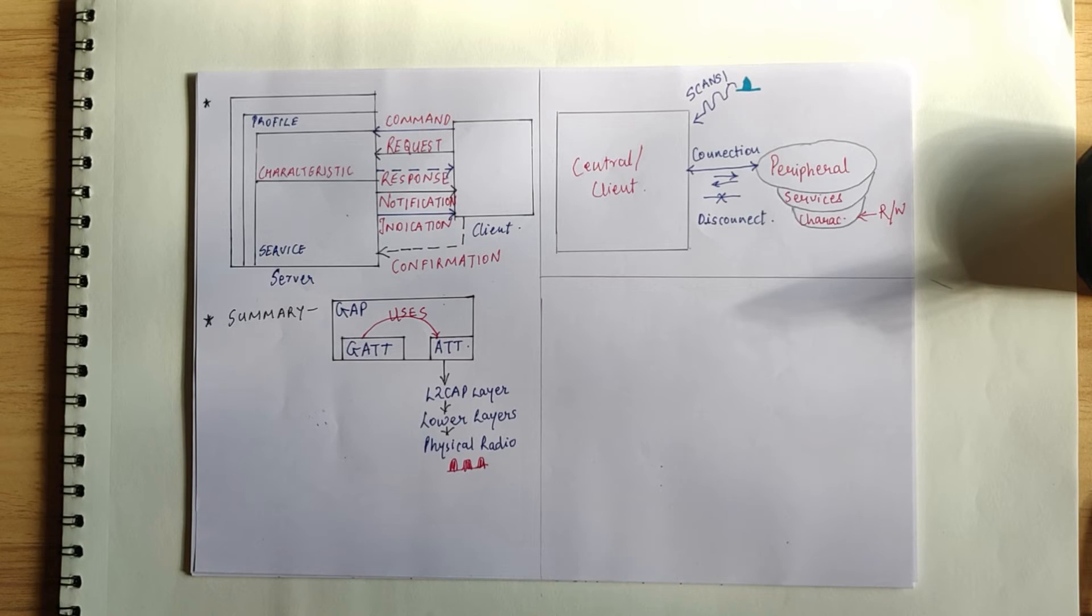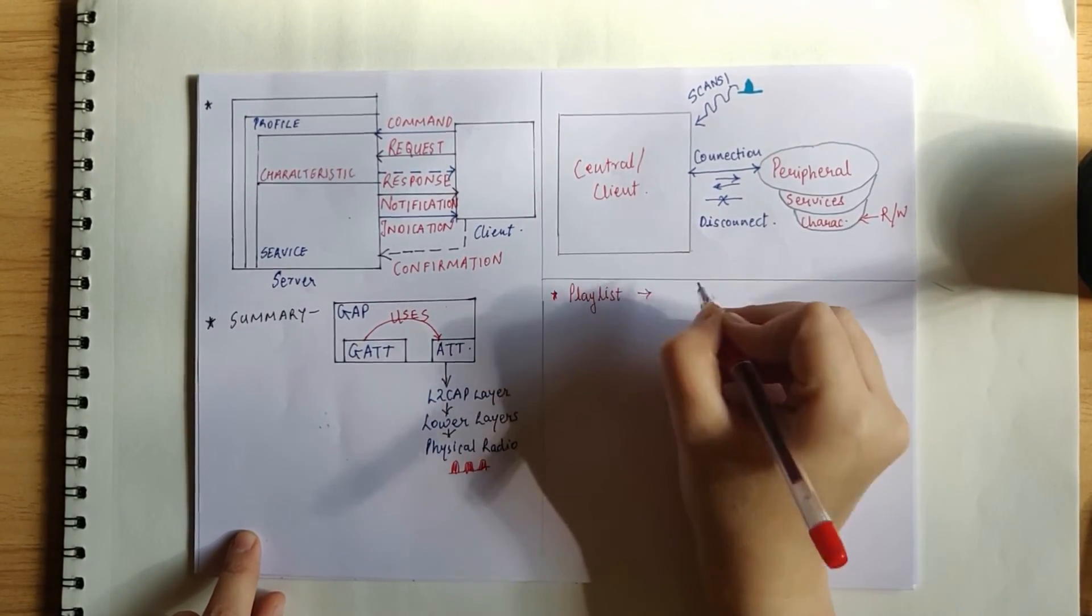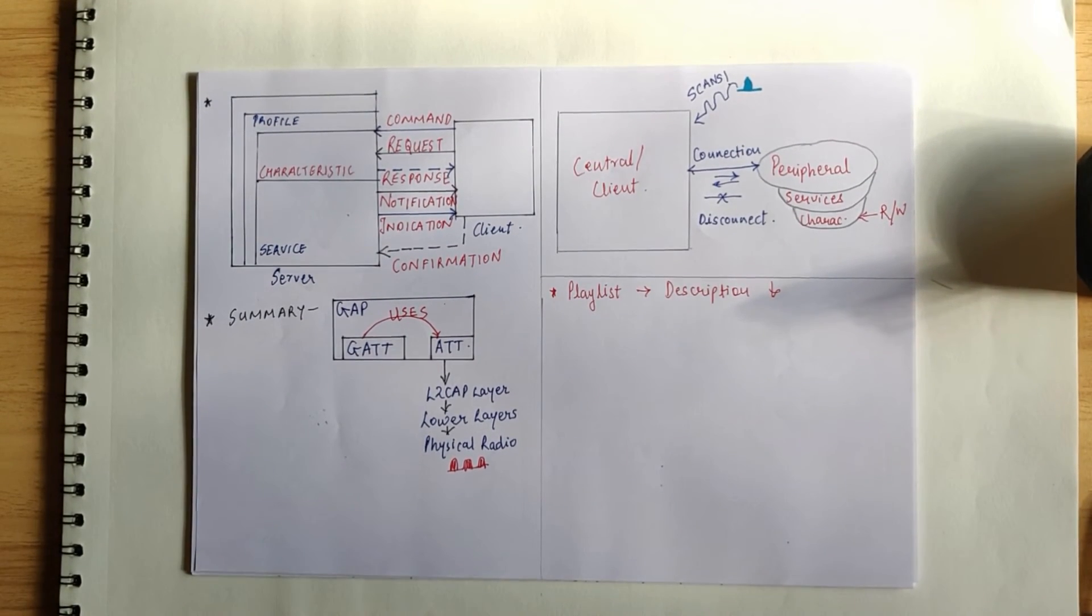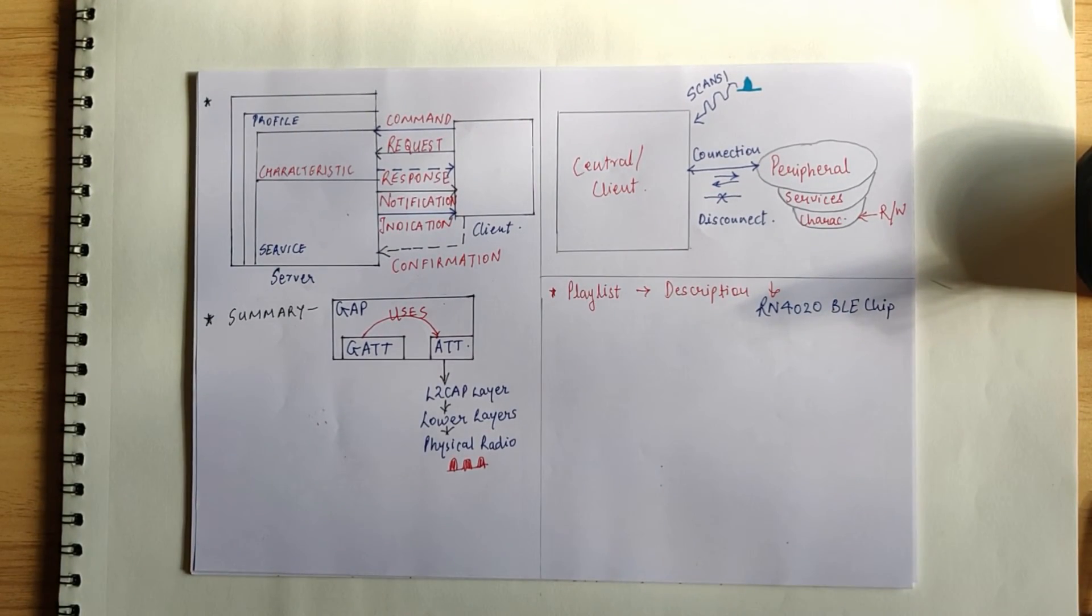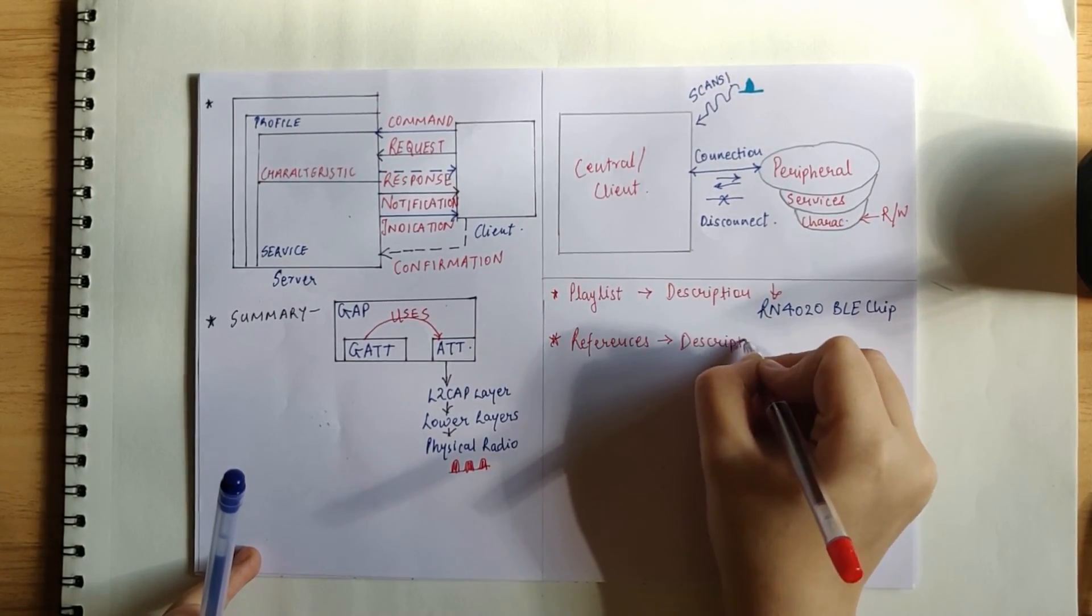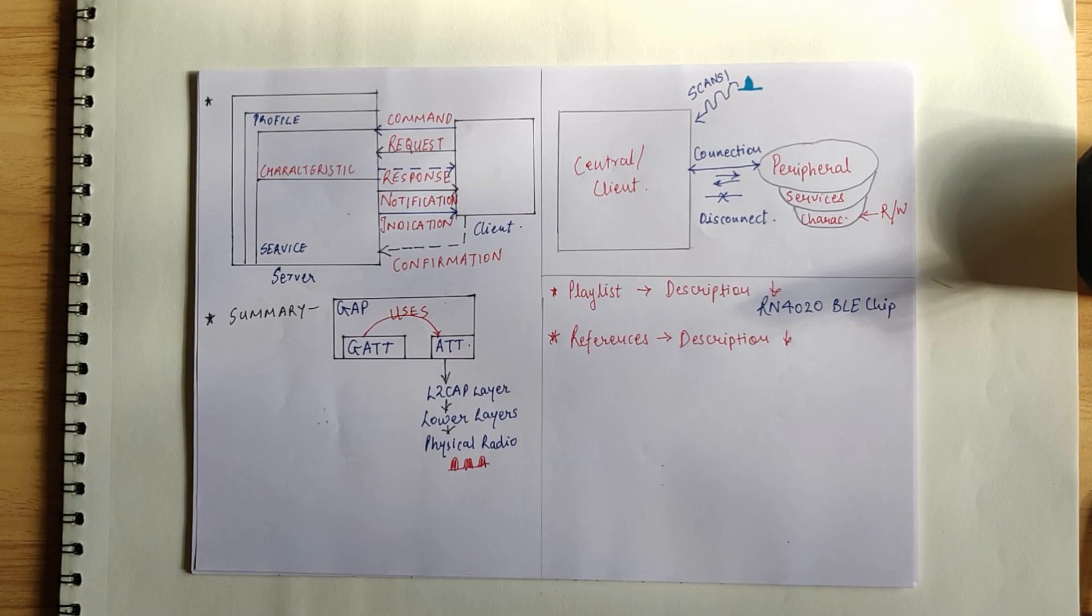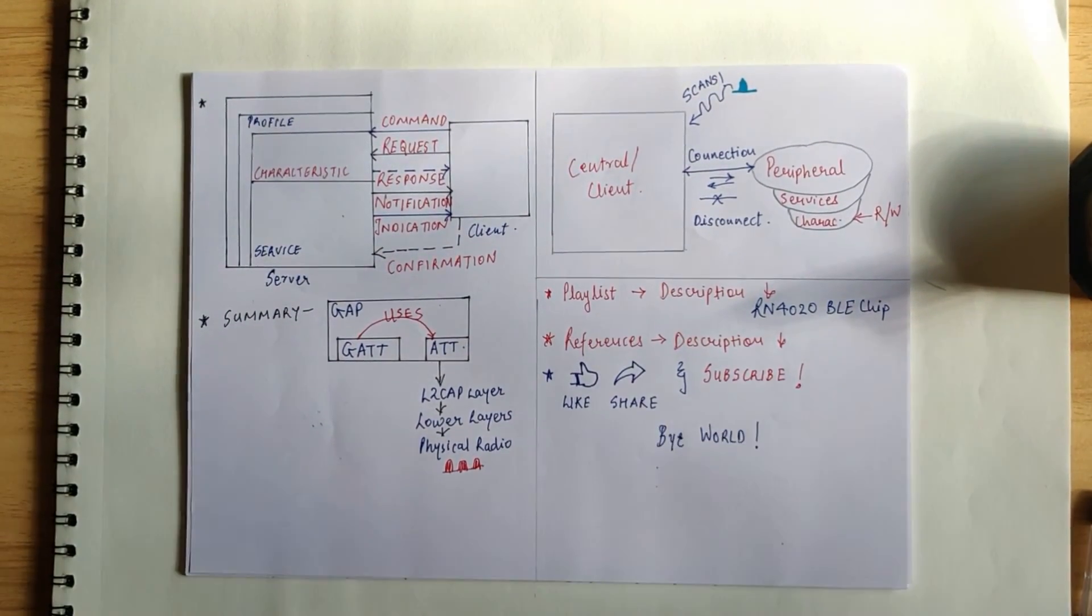So, that's all about BLE, the basics that you will need to get started with some projects. Now, that's a whole lot of theory. But what about practical examples? Well, the good news is, I have got you covered on that as well. Do check the playlist that I've added in the description below, which covers a project idea based on RN4020 BLE chip. There is a lot to this technology and there are many books, articles, videos and papers available on this subject. And you can find the ones that I referred in the description below. If you're curious to know more, then they will certainly be of great help. With that said, like and share the video and subscribe to the channel. And I'll see you next time. Bye world!